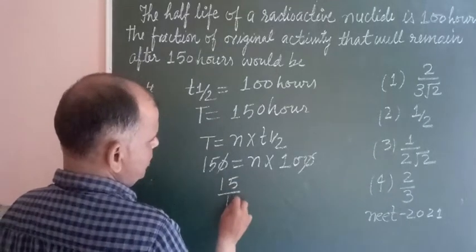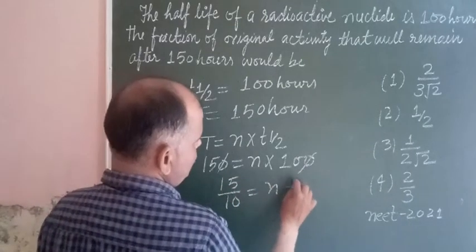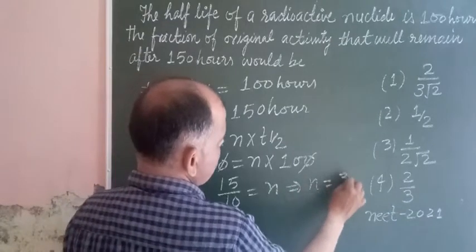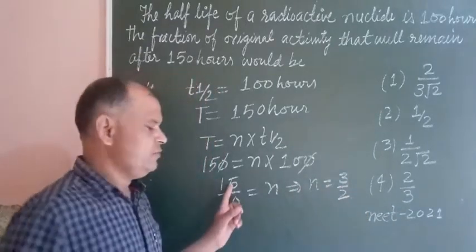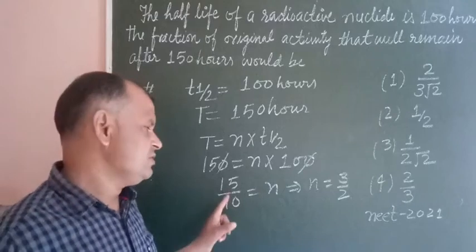150 upon 100 equals N, or 15 upon 10 equals N, which simplifies to N = 3/2.